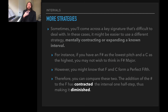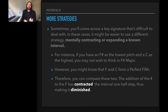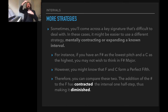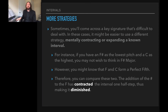There are some other strategies you can use. Sometimes you'll come across a key signature that's difficult to deal with. In these cases, it might be easier to mentally contract or expand a known interval to find what the new quality is. Let's say you have an F sharp as the lowest pitch and C as the highest, and you might not want to think in F sharp major — which is totally understandable. However, you might know that F and C form a perfect fifth. Therefore, you can compare F sharp and C against F and C. The addition of the sharp on the F means that the interval has contracted — that musical space has contracted one half step smaller, therefore making it a diminished interval.